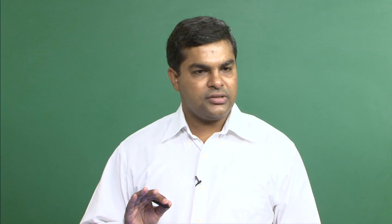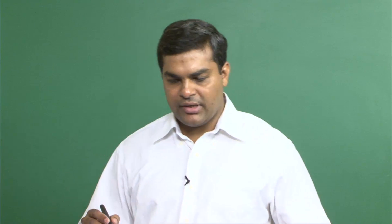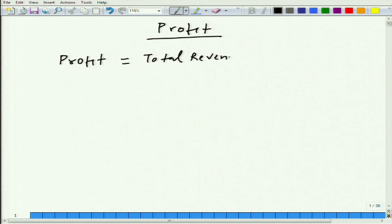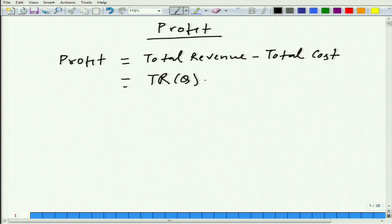Today we are going to talk about profit maximization. We have already talked about cost, total cost, cost curve, cost function, and also cost minimization. Today we are going to talk about profit — what do we mean by profit? Simply, profit is the difference between total revenue, what you earn (given by TR(Q)), and total cost, what you spend (TC(Q)). TR stands for total revenue and TC stands for total cost.